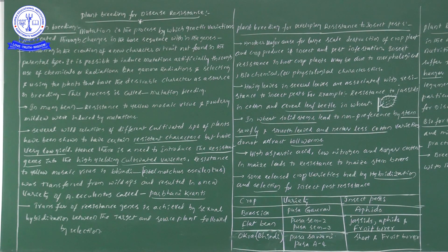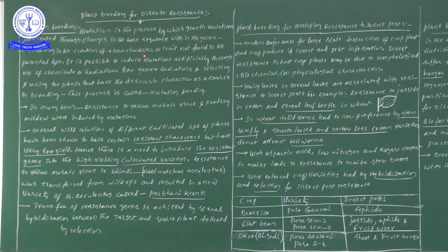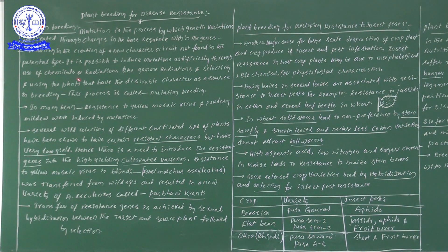We take one plant and make changes in the base sequence within the genes. When we change the base sequence within the genes, it definitely results in the creation of new characters or new traits which are not found in the parent. It is possible to induce mutations artificially.